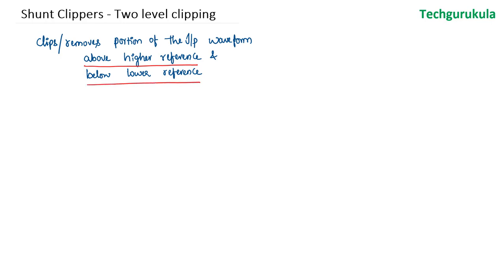Let me take an example. We have an input waveform with two references — VR1 is the higher reference and VR2 is the lower reference. The portion above VR1 will be clipped and the portion below VR2 will be clipped. We have already seen above-reference and below-reference clippers separately; now we need to combine both into one circuit.